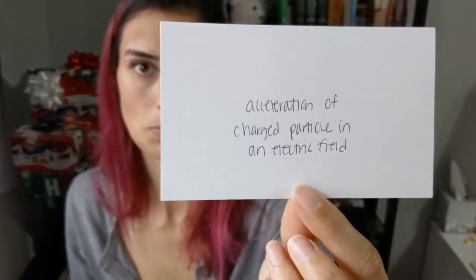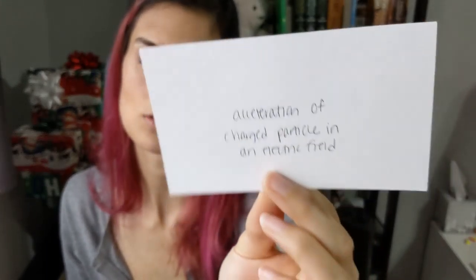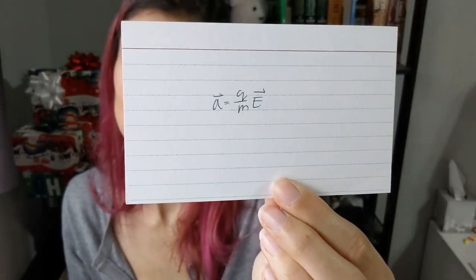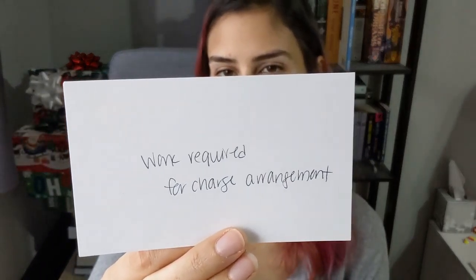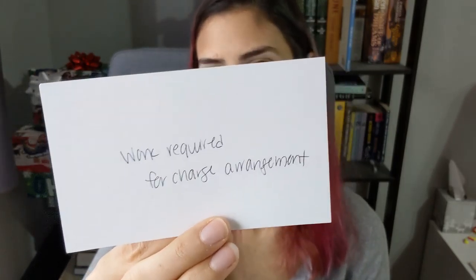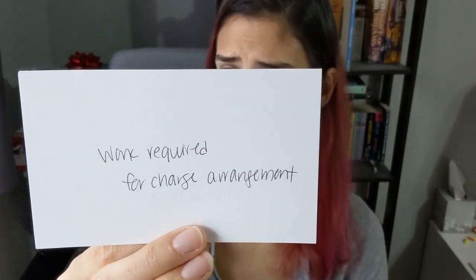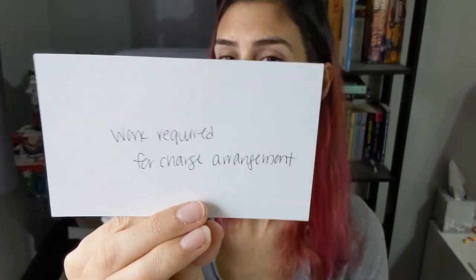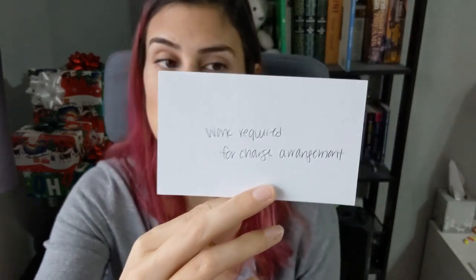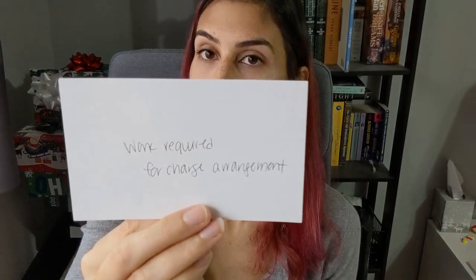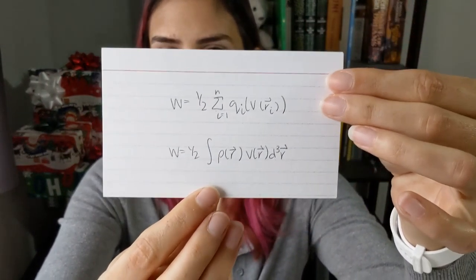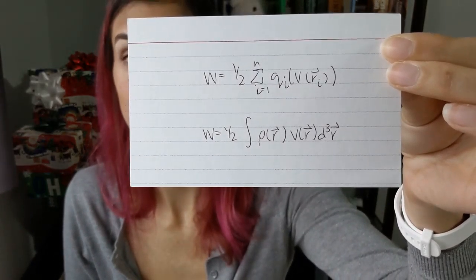The acceleration of a charged particle in an electric field: a equals Q over m times E. The work required to assemble a charge arrangement: W equals one half times the sum from 1 to n of Q sub i times V of r sub i. For a continuous distribution: W equals one half times the integral of rho of r times V of r.